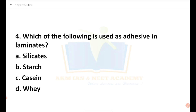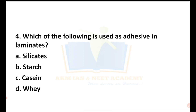Fourth question: Which of the following is used as an adhesive in laminates? In lamination, we use an adhesive. The options are silicate, starch, casein, and whey. This also comes under packaging. Aluminum foil has an impermeable property and is used as a laminate. The correct answer is casein.